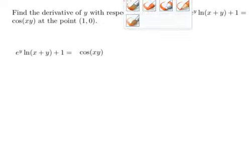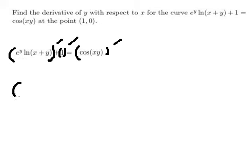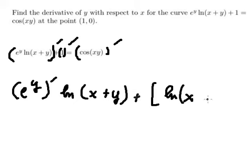If we do the first derivative, we need to do the first derivative of this expression. We apply the product rule: we do the first derivative of e to the power of y, multiplied by ln of x plus y, and then the first derivative of ln of x plus y, multiplied by e to the power of y.